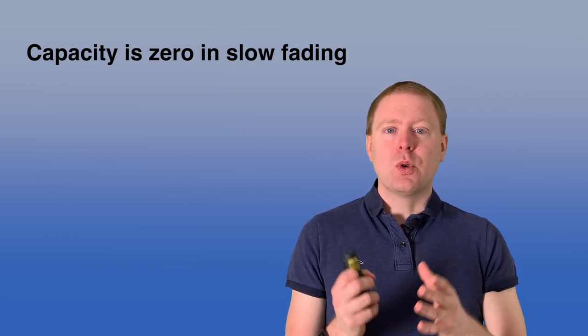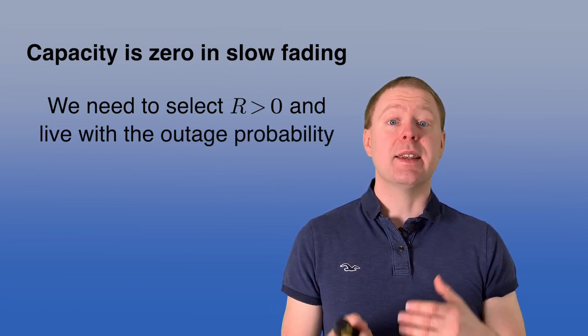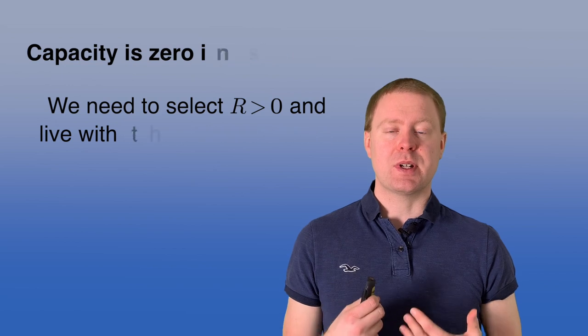However, in order to have a useful system, we need to select an r that is larger than that, and live with that we have a probability of outage, a probability that the transmission is failing.